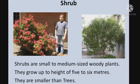Next we have another kind of plant known as shrubs. Shrubs are small to medium sized woody plants. They grow up to a height of 5 to 6 meters and they are smaller than trees. As you can see in the picture, they have many branches and very strong stems.